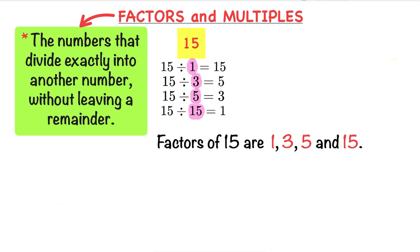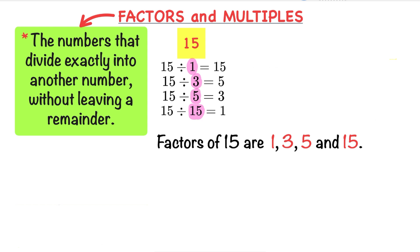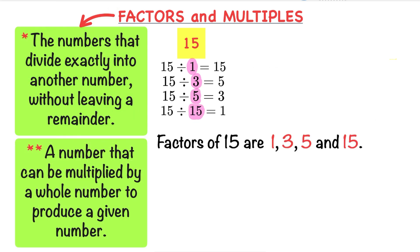Another way to find factors is to think which numbers multiply together to make this number. Let's try to find the factors of 12 using this method. Which numbers multiply together to make 12? 1 times 12, 2 times 6, 3 times 4.